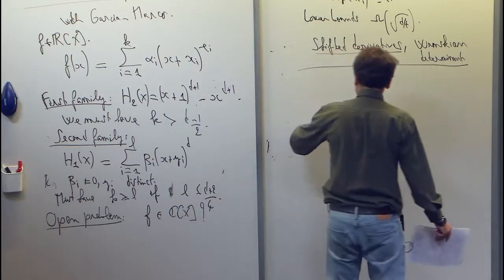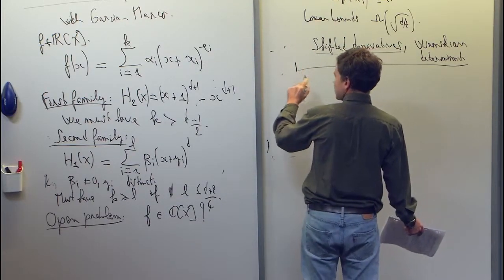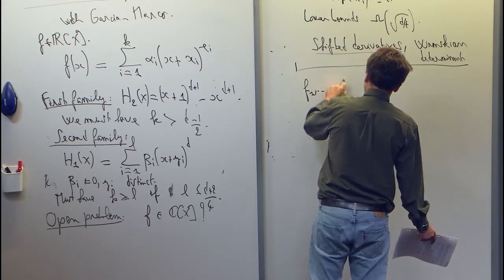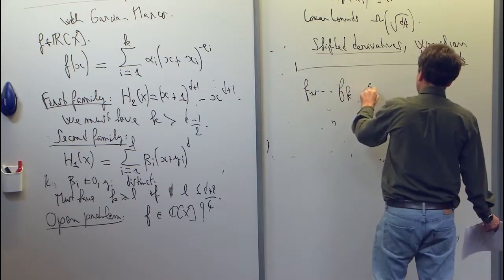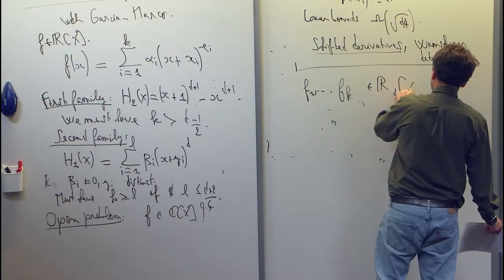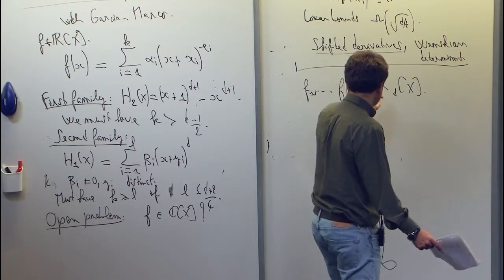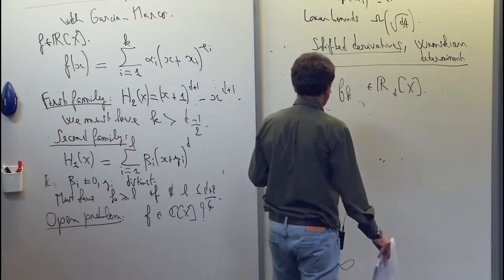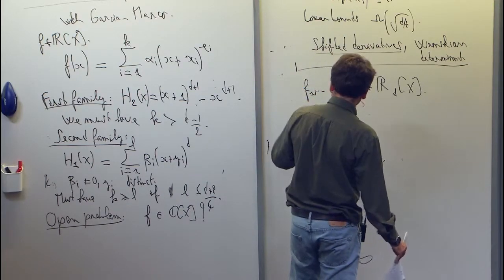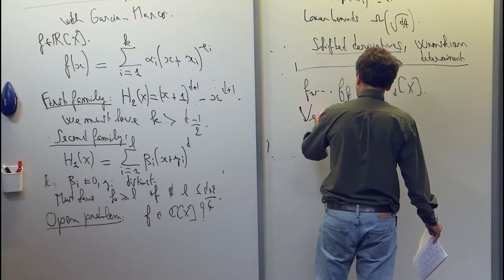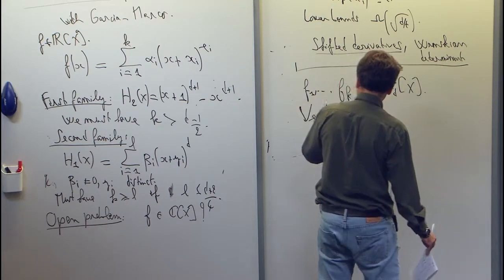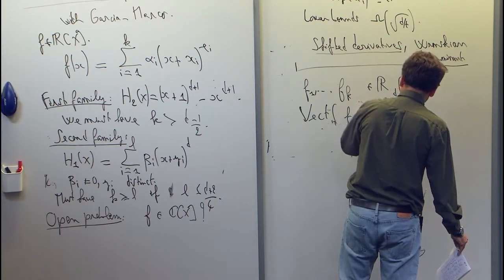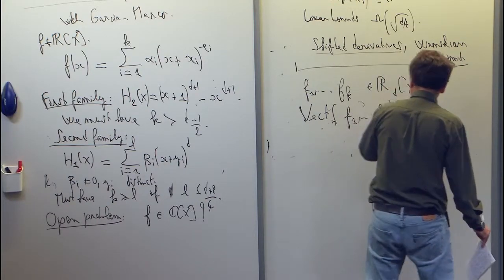So let's try to explain this. Assume that we were given k polynomials of degree at most d. So this is R sub d, that's the linear space of polynomials of degree at most d. So we want them to be linearly independent. So we look at the space span by these k polynomials. We want the dimension to be k.